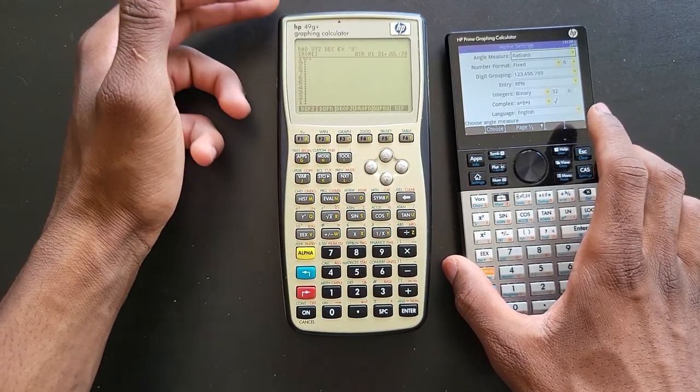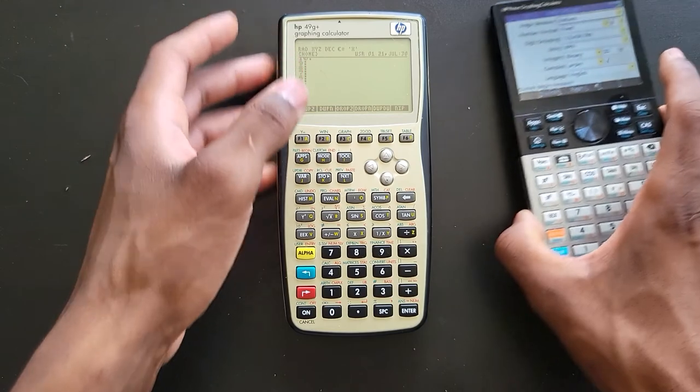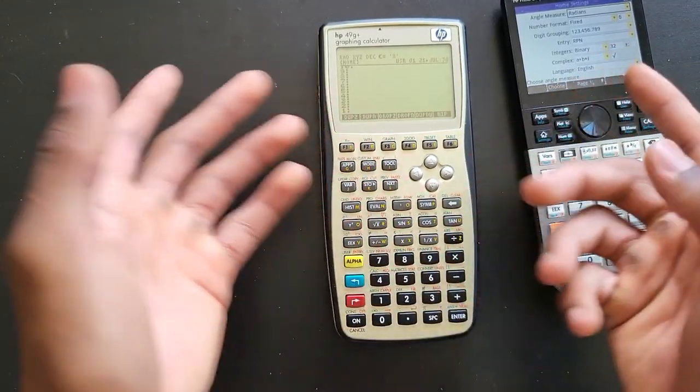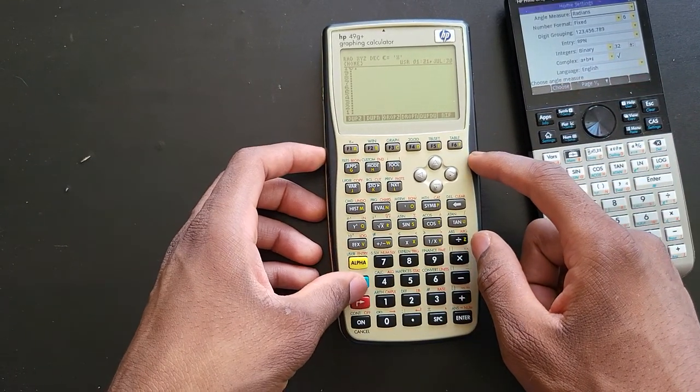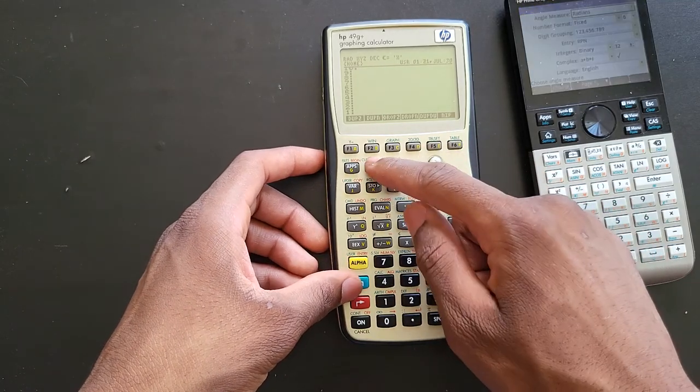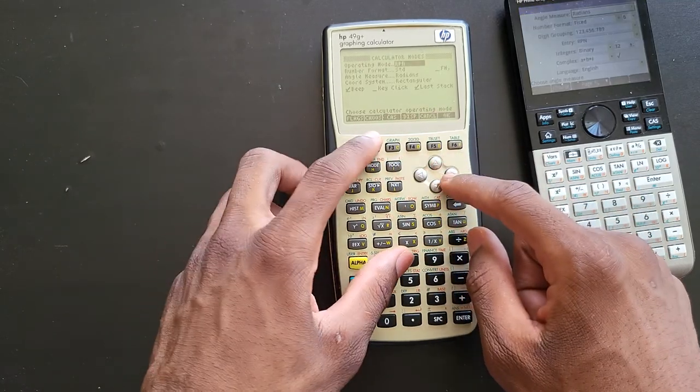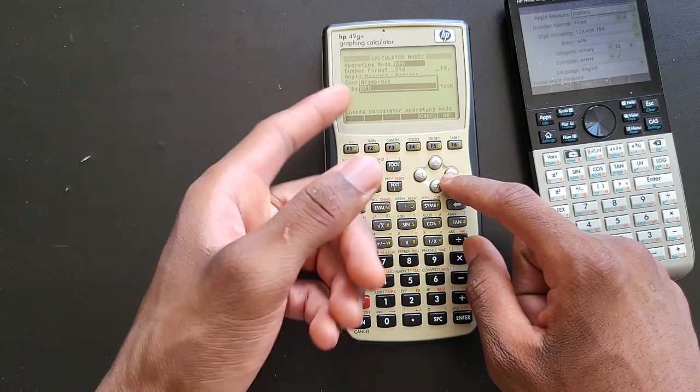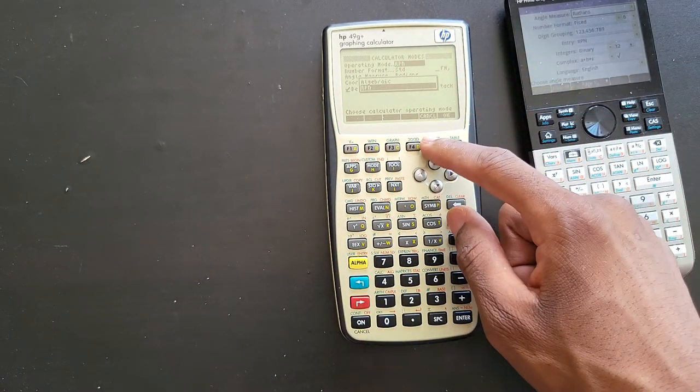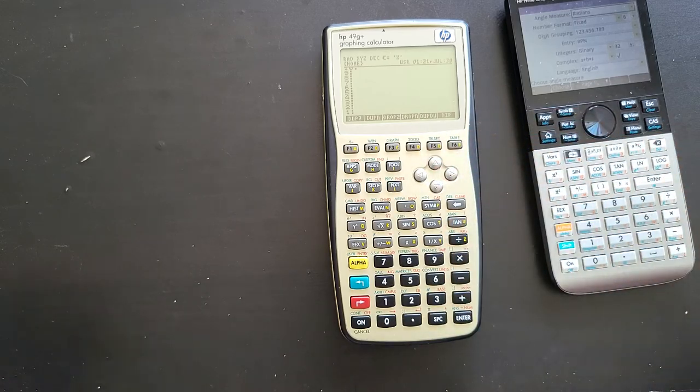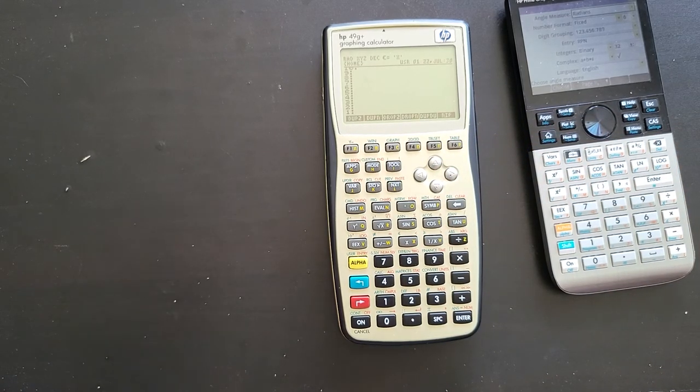This calculator is already in RPN mode, but it also gives you the option to switch to algebraic mode. Those are the two modes it got - algebraic and RPN. So real RPN, this is what it looks like.